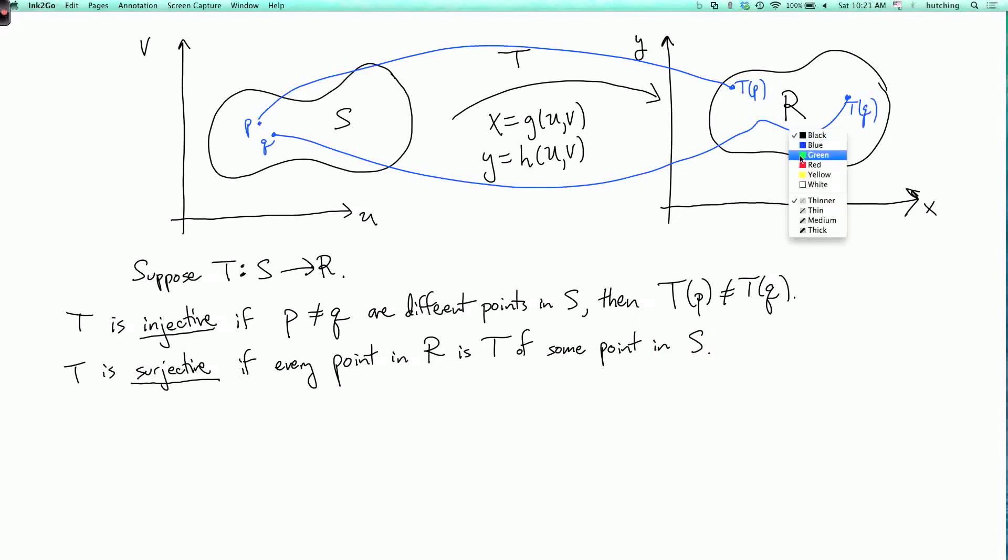So if I pick any point over here, then I can find some point in S which is getting mapped to it. So all of R is getting covered by this transformation applied to S.